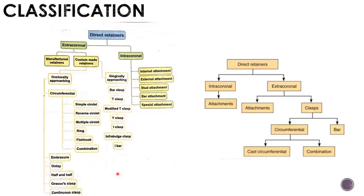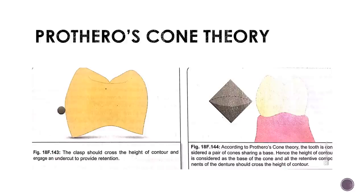In 1916, Prothero proposed the cone theory to explain the basis for clasp retention. According to this theory, the shape of the crown of posterior teeth should be equivalent to two cones — upper and lower — sharing a common base. The upper one is the occlusal and the lower one is the cervical.